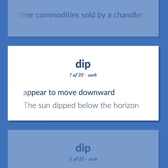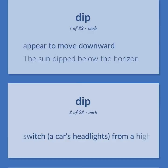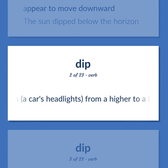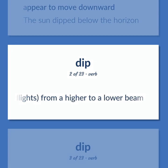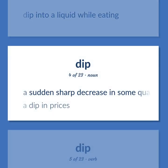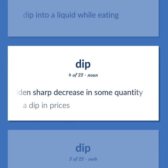Dip: appear to move downward — the sun dipped below the horizon. Switch a car's headlights from a higher to a lower beam. Dip into a liquid while eating. A sudden sharp decrease in some quantity — a dip in prices.